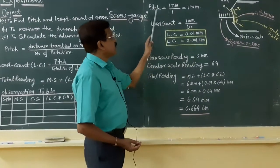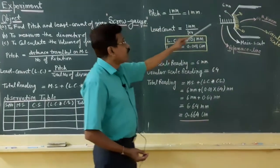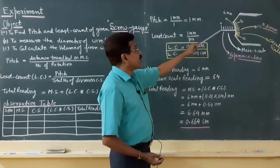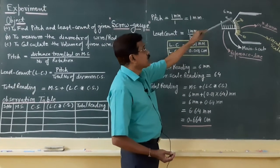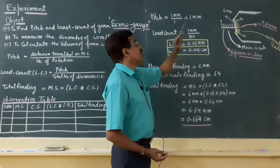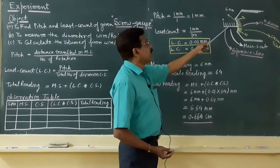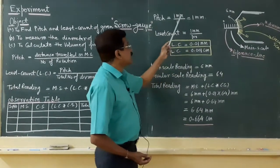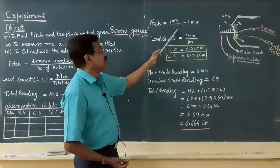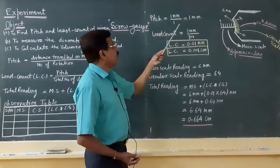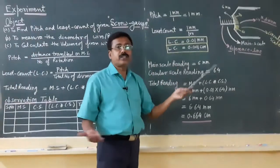What will be the pitch? When you rotate once, only 1 millimeter is travelled on the main scale — that is 1 mm per 1 rotation. If you rotate twice, it will be 2 mm per 2 rotations, giving pitch = 2 mm / 2 = 1 mm. In every case the pitch is 1 mm — this is a constant value.